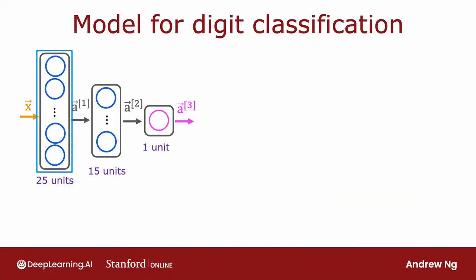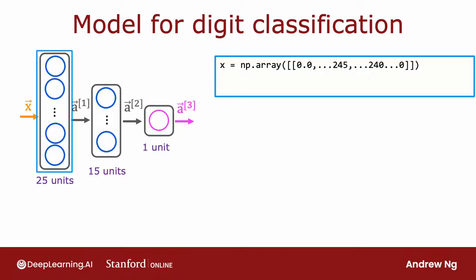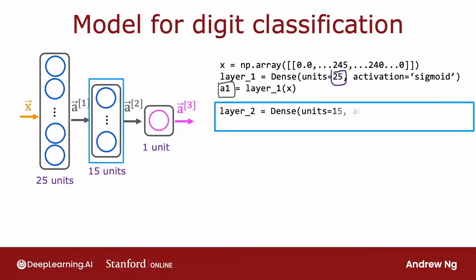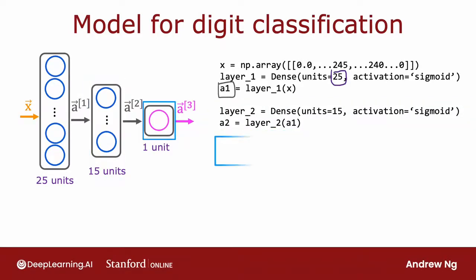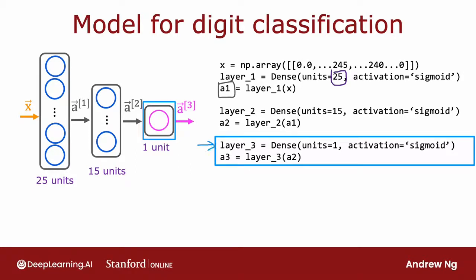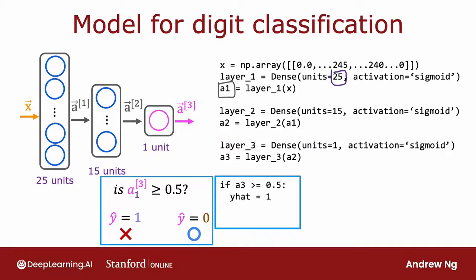In this example, x is a list of the pixel intensity values, so x equals a numpy array of this list of pixel intensity values. To initialize and carry out one step of forward propagation, layer_1 is a dense layer with 25 units and the sigmoid activation function. You then compute a1 equals the layer_1 function applied to x. To build and carry out inference through the second layer, similarly, you set up layer_2 as follows and compute a2 as layer_2 applied to a1. And then finally, layer_3 is the third and final dense layer. Finally, you can optionally threshold a3 to come up with a binary prediction for y_hat.